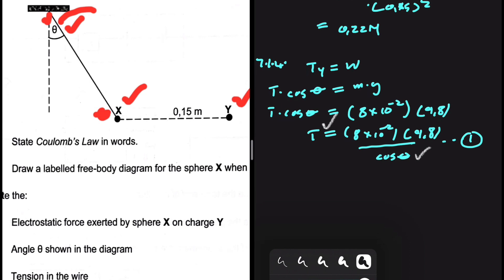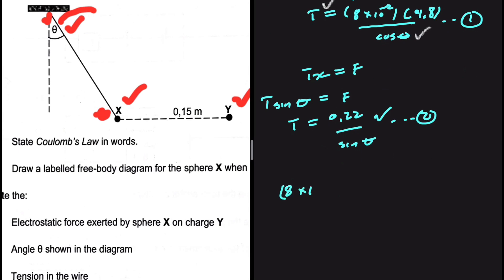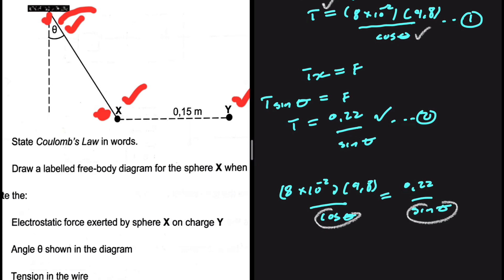The forces along the x are also balanced. We have Tx equals the electrostatic force. Tx is T·sin(theta), which equals 0.22. So tension equals 0.22 divided by sin of theta — that is equation 2. Since both expressions equal the tension, we set them equal: (8 times 10 to the minus 2 times 9.8) divided by cos(theta) equals 0.22 divided by sin(theta). If we divide sin(theta) by cos(theta), we get tan(theta), which simplifies the problem.